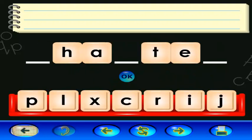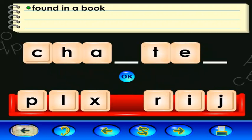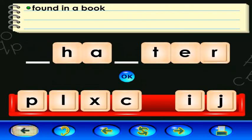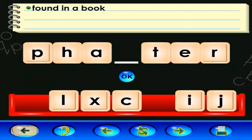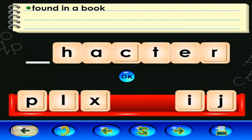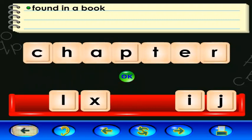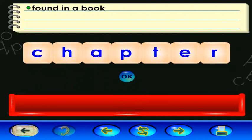Spell the word that matches this clue: found in a book. The mystery word is chapter. We read about frogs in chapter five of our science book. Click the go on arrow to go to the next activity.